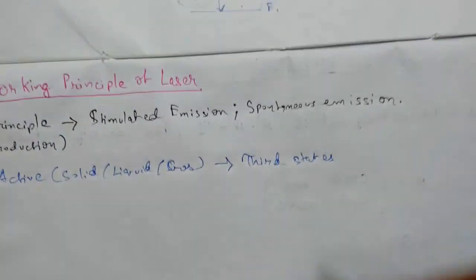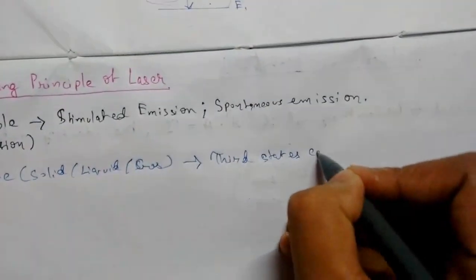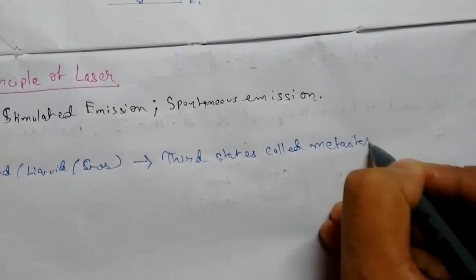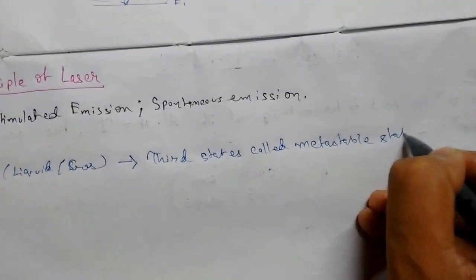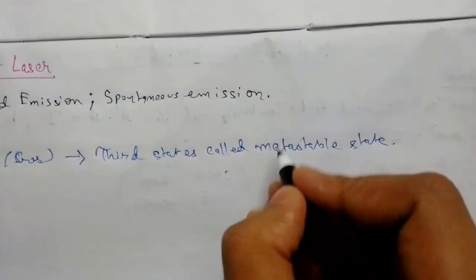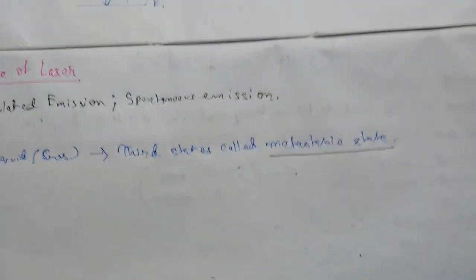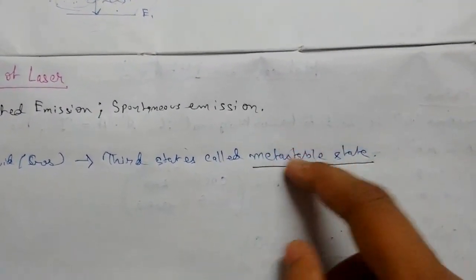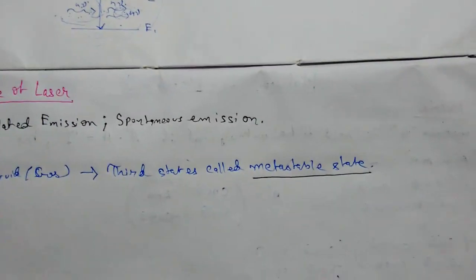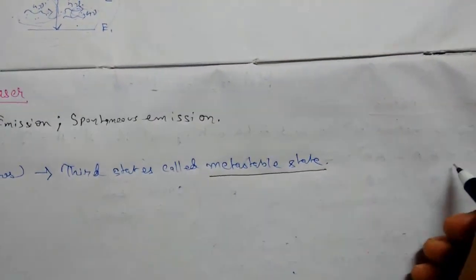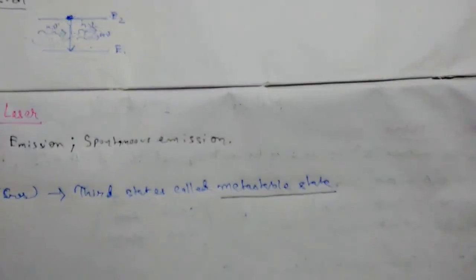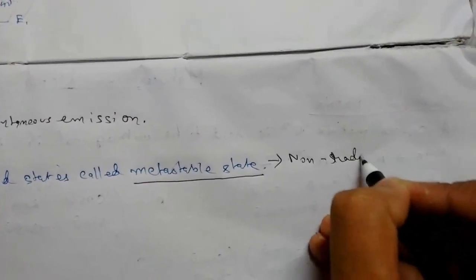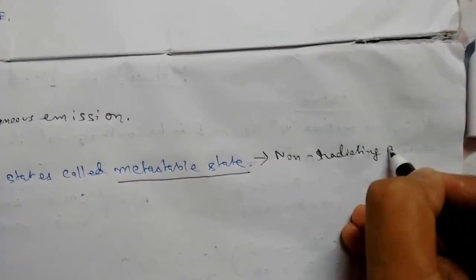This third state is what we call the metastable state. This is a very important state. It is an extra state besides the normal excited and ground level states. This is also a non-radiating state.